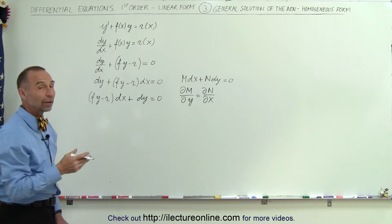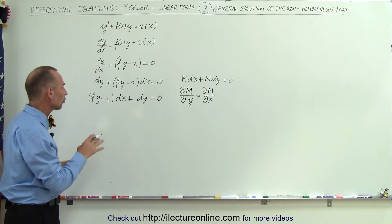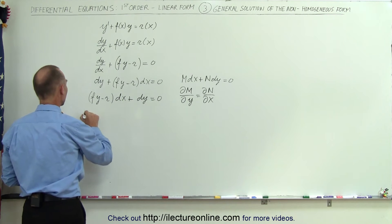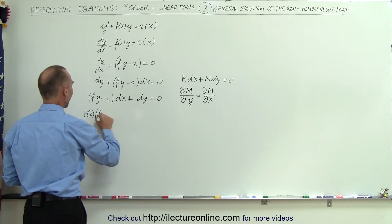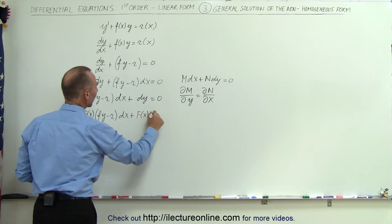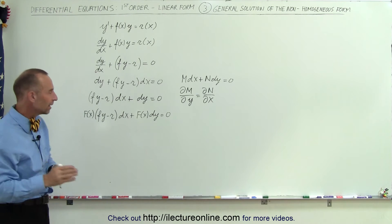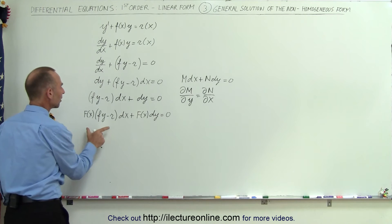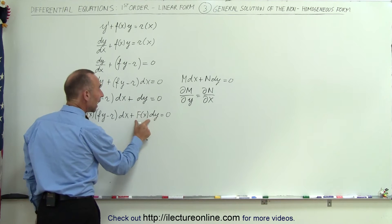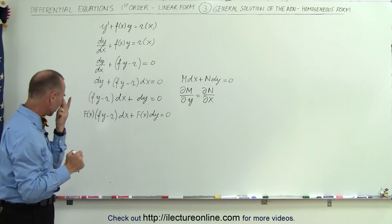In order to make the equation exact, we're going to multiply by an integrating factor. Let's say the integrating factor is a function of x, which we'll call φ(x). Multiplying both sides by φ(x), we get φ(x)·(f·y minus r) dx plus φ(x) dy is equal to 0. Now if we take the partial of the M term with respect to y and set it equal to the partial of the N term with respect to x, we can solve for the integrating factor and find the general solution.